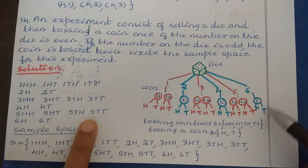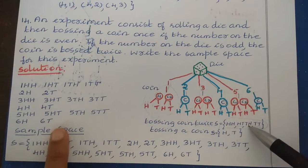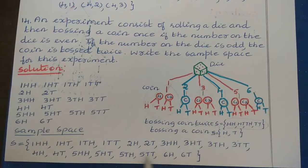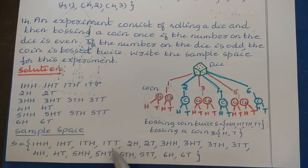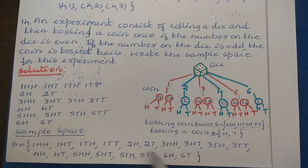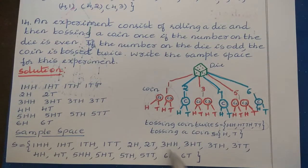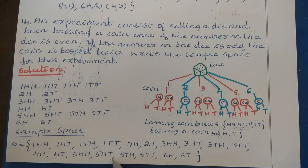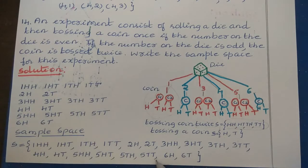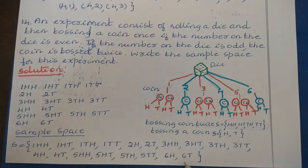Then 6 is an even number, so we toss a coin once, giving (6,H) and (6,T). So the complete sample space is S = {(1,HH), (1,HT), (1,TH), (1,TT), (2,H), (2,T), (3,HH), (3,HT), (3,TH), (3,TT), (4,H), (4,T), (5,HH), (5,HT), (5,TH), (5,TT), (6,H), (6,T)}.